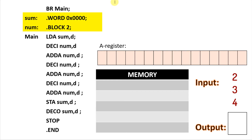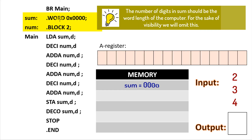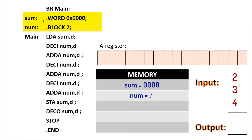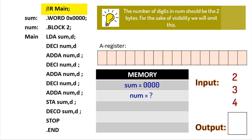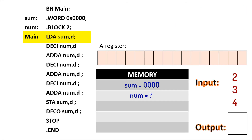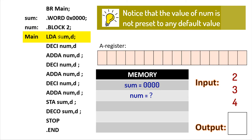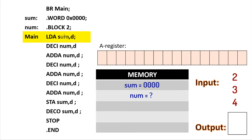We see that two directives are used. We reserve a word length of space for a variable called 'sum' and assign a 0 to it. We also reserve two blocks of memory for another variable called 'num'. At the beginning of our program, we branch to a memory address called main. We find it and branch to this memory address. In this instruction, we load sum to the accumulator. Sum currently contains a default value of 0, as instructed by the directive to the assembler, so we will load a 0 to the A register.